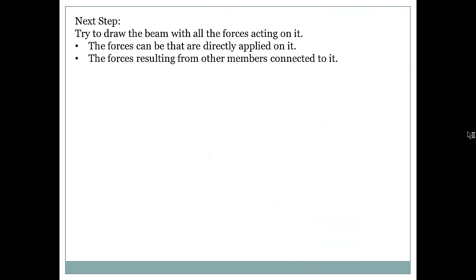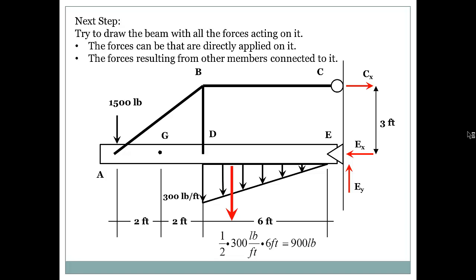Now the next step is to try to draw the beam with all the forces acting on it. That is basically the forces that are directly applied on it, for example, the 1500 or the distributed load. And the forces resulting from other members connected to it. So we have members AB, BD and BC. These are the members connected to the beam. I know you can tell that AB and BD are directly connected to the beam. So I need to find the forces in these members. So I can basically replace these members with point loads acting on the beam, either in tension or in compression, either pushing the beam down or pulling the beam up.